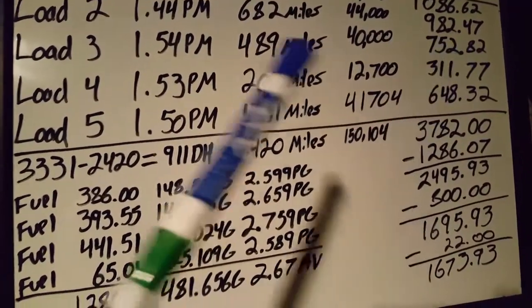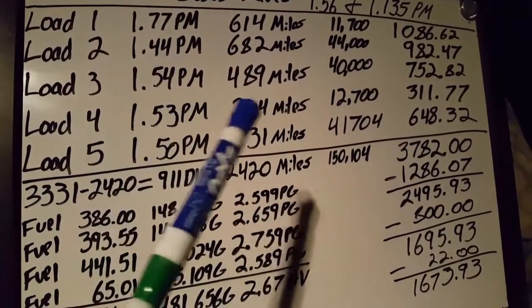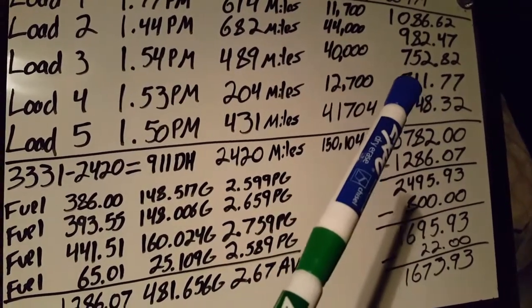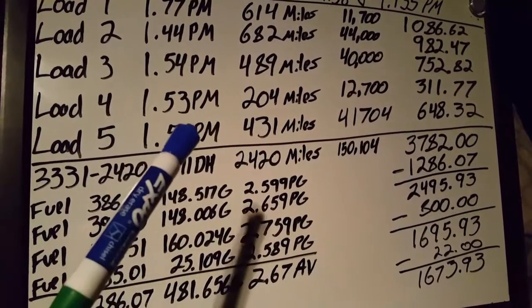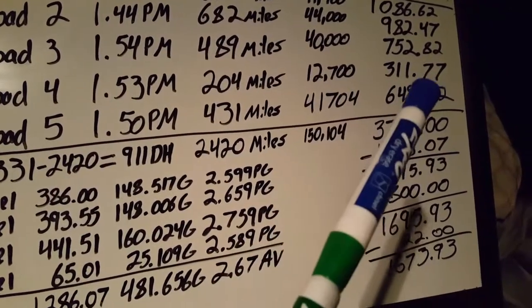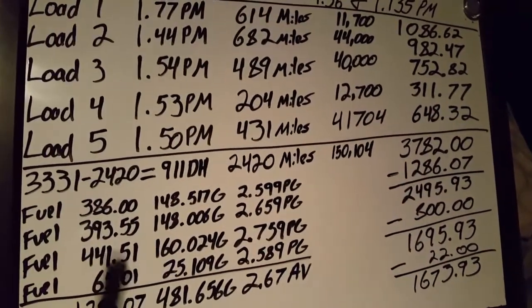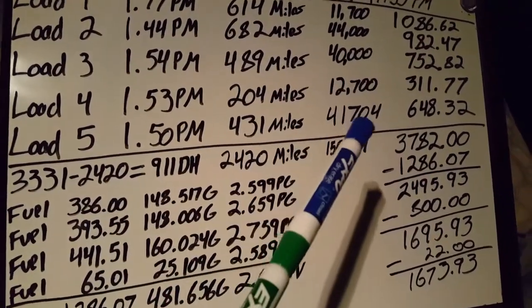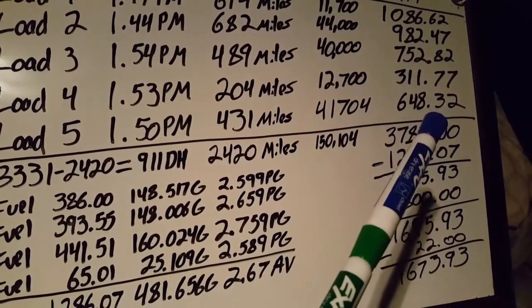Load three: $1.54 per mile, 489 miles, 40,000 pounds, $752.82. Load four: $1.53 per mile, 204 miles, 12,700 pounds, $311.77. Load five: $1.50 per mile, 431 miles, 41,704 pounds, $648.32.